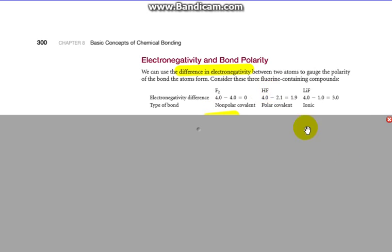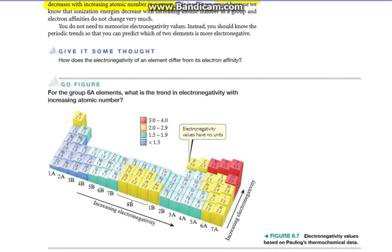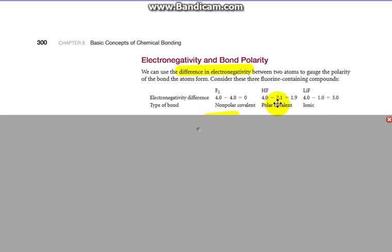HF, so again, F is 4.0. H, if we look back, is 2.1. So 4.0 minus 2.1 is 1.9. So that is definitely polar, and we know that HF is a covalent molecule, so polar covalent.